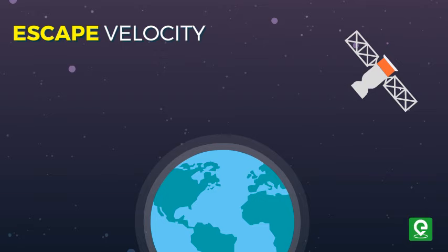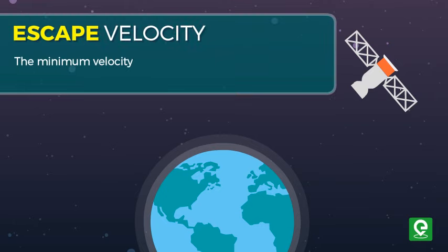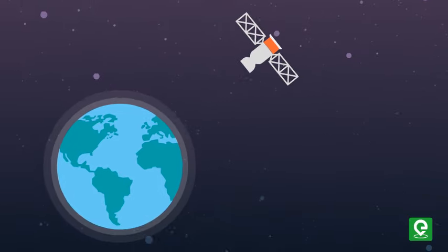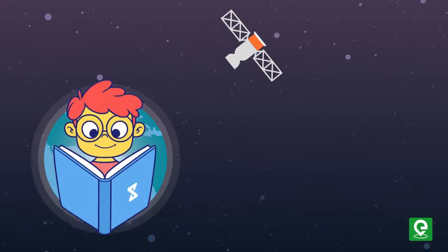Or in other words, the minimum velocity which a body must have in order to escape the gravitational attraction potential of a planet is known as escape velocity. Consider a planet like Earth.